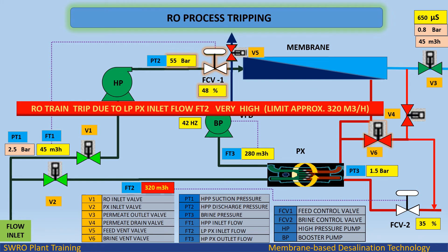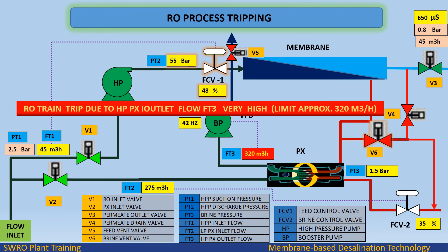RO train trip due to LP pressure exchanger inlet flow FT2 very high, limit approximately 320 cubic meters per hour. RO train trip due to LPPX outlet flow FT3 very high, limit approximately 320 cubic meters per hour.